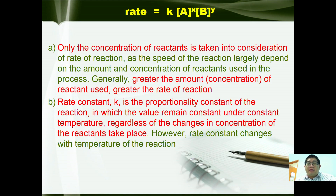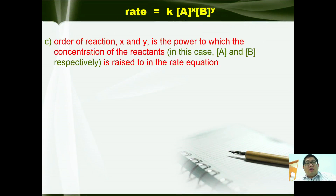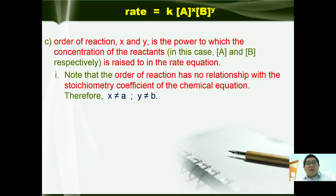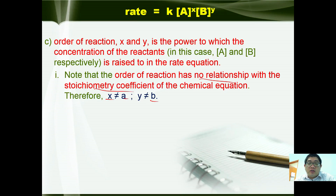However, the rate constant changes with the temperature of the reaction. We also know that the order of reaction, x and y, is the power to which the concentration is raised in the rate equation. However, the order of reaction has no relationship with the stoichiometric coefficients of the chemical reaction. Therefore, x is not equal to a. Here, a is the stoichiometric coefficient for A, while b is the stoichiometric coefficient for B, so order of reaction x and y has no relationship with them.